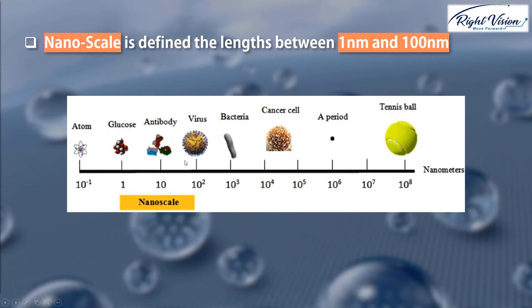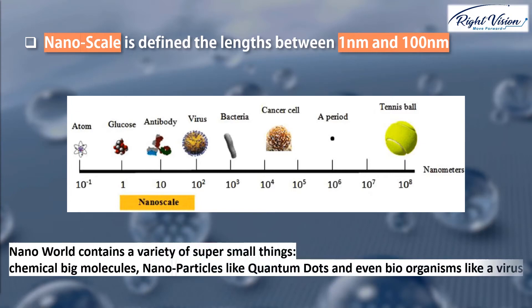At the lower limit of the nanoworld, around 1 nanometer, we would observe things like glucose, which is actually a big molecule. So when we say nanoworld, we are talking about a variety of super small things — like large chemical molecules, nanoparticles like quantum dots, and even bio-organisms like a virus.